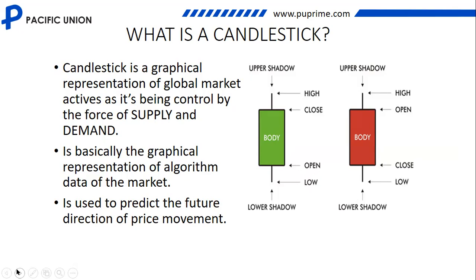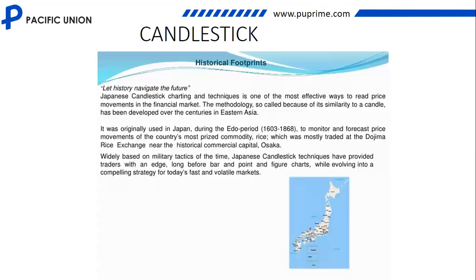A candlestick is a graphical representation of global market activities as it is controlled by the forces of supply and demand. Supply means the activities of the sellers, and demand means the activities of the buyers. Candlestick is a graphical representation — it represents price movement in a graph or bar form. It is basically the graphical representation of algorithmic data of the market, telling you what the price is doing from beginning to end. It is used to predict the future direction of price movement.